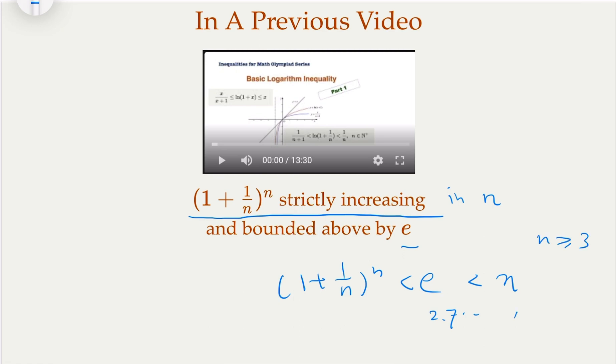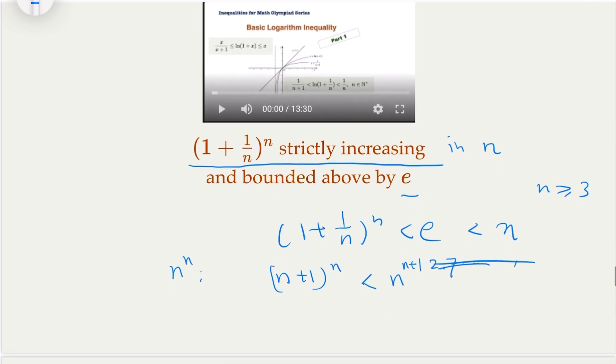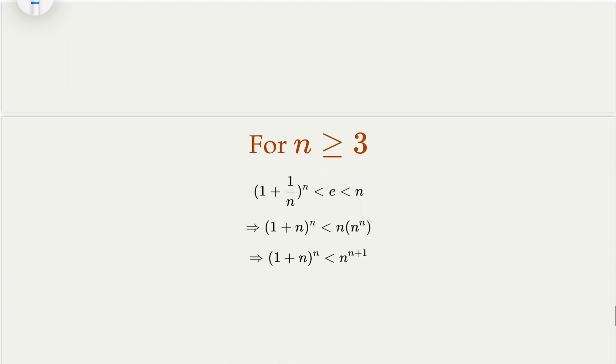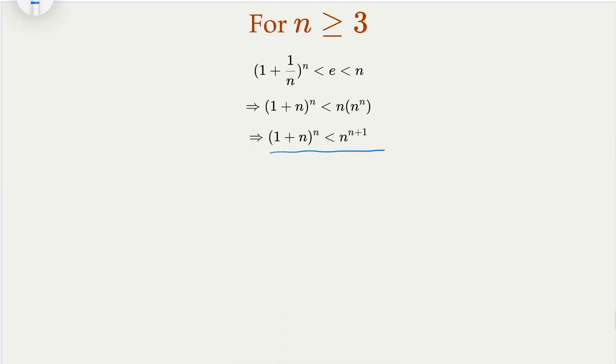So if you do that, you multiply n to the nth power on both sides. What you get is n plus 1 raised to the n is smaller than n times n raised to the nth power, which is n to the n plus 1 power. So we proved the inequality like that. So check out the previous video. But here, this is from the previous video, and then you multiply n to the nth power on both sides. And you get this, which is exactly what we're trying to prove.